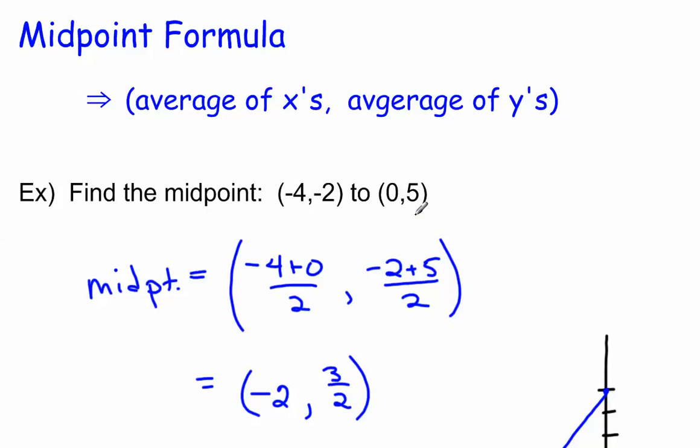So if I have these two points, and I want to find the average x and the average y, I'm going to take negative 4 plus 0, divide that by 2, because I added two things. Negative 2 plus 5, divide that by 2, reduce each of those, and we get negative 2 and 3 halves.